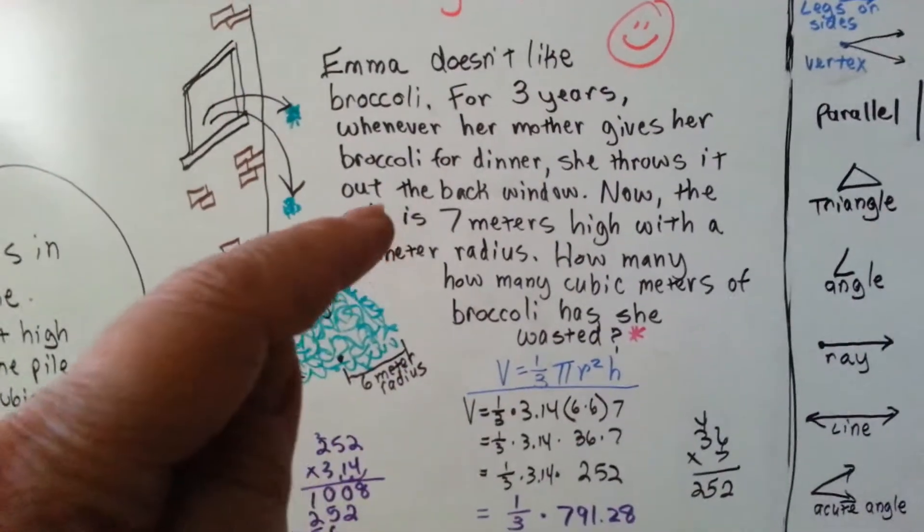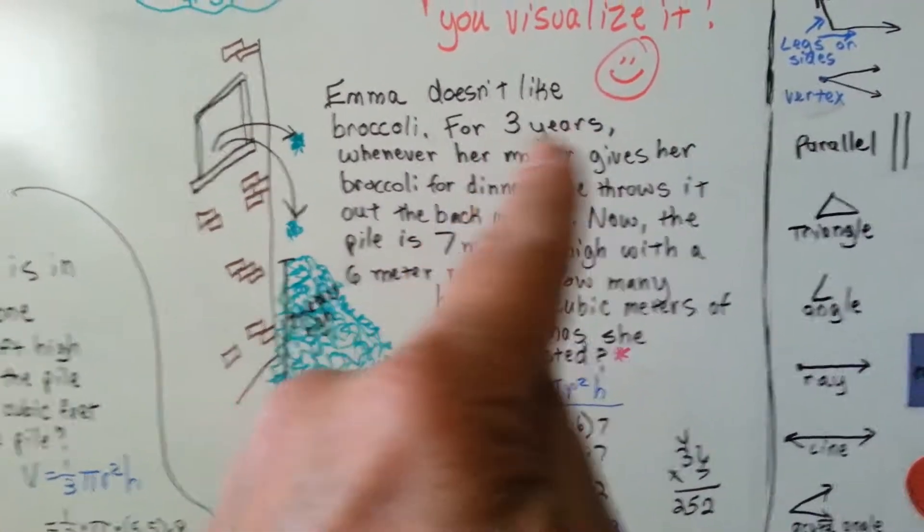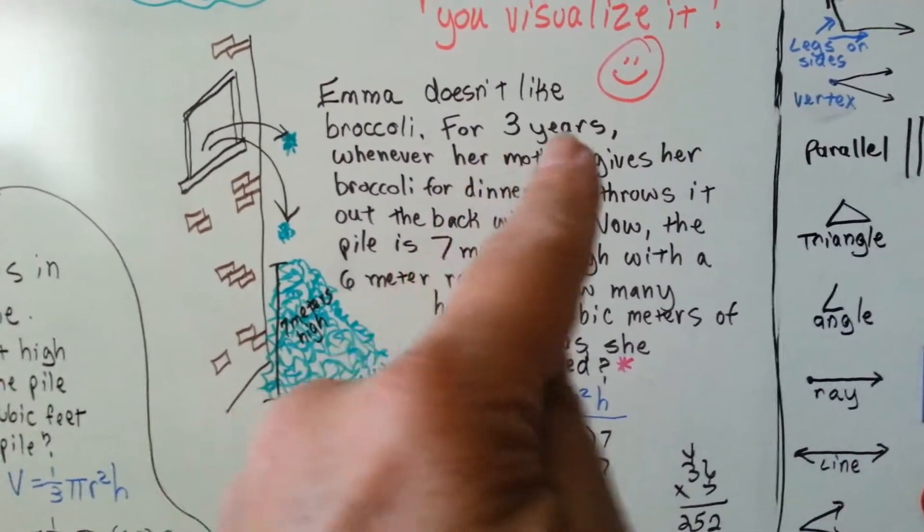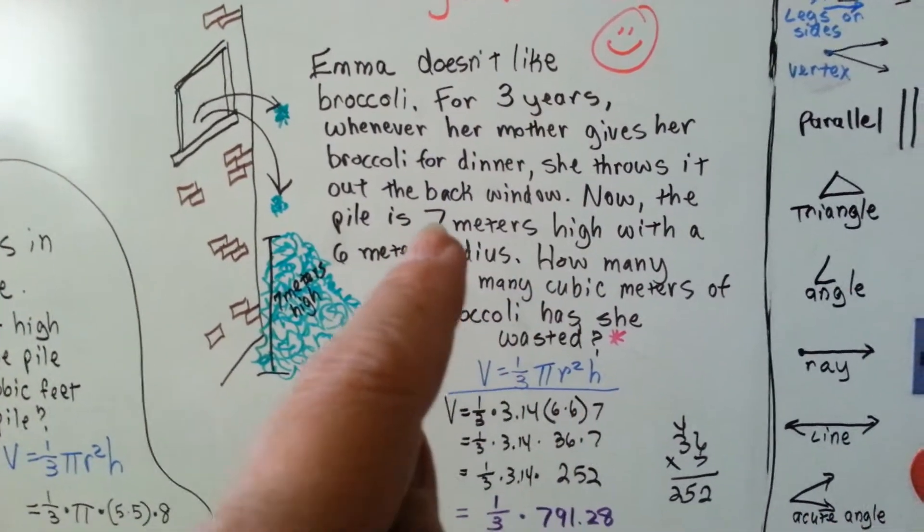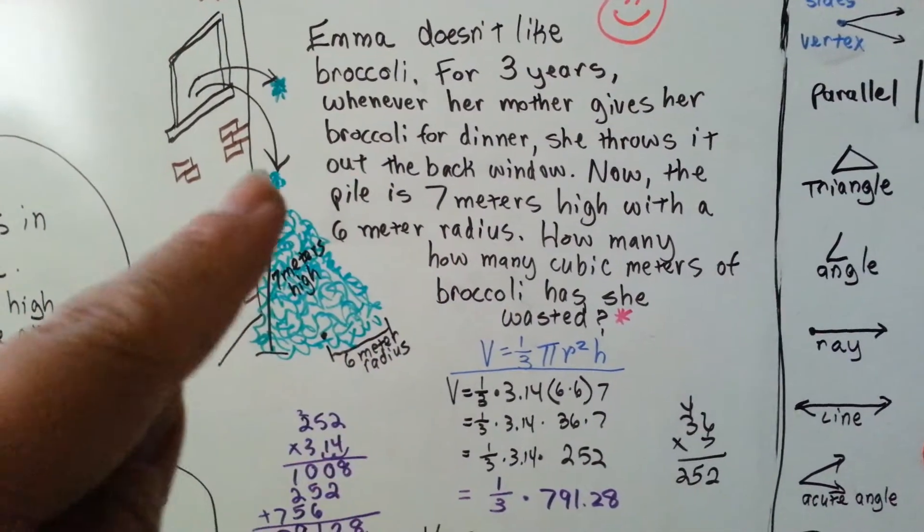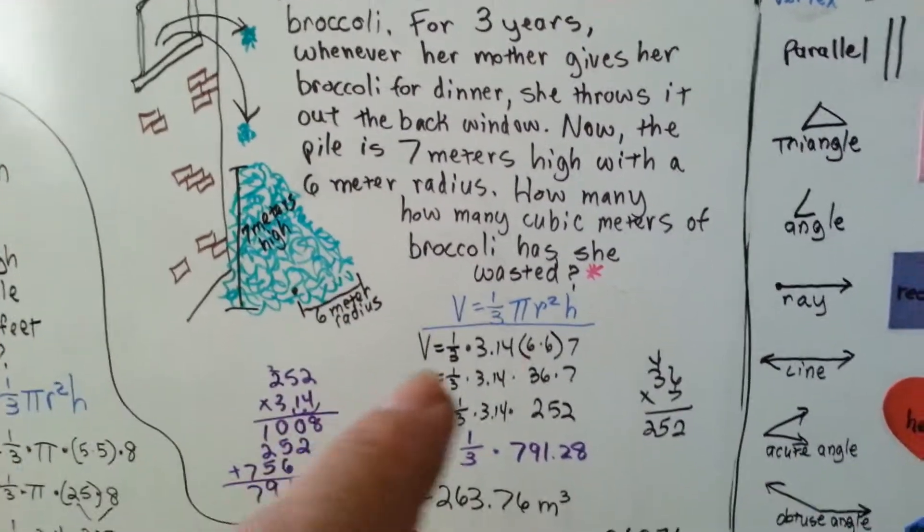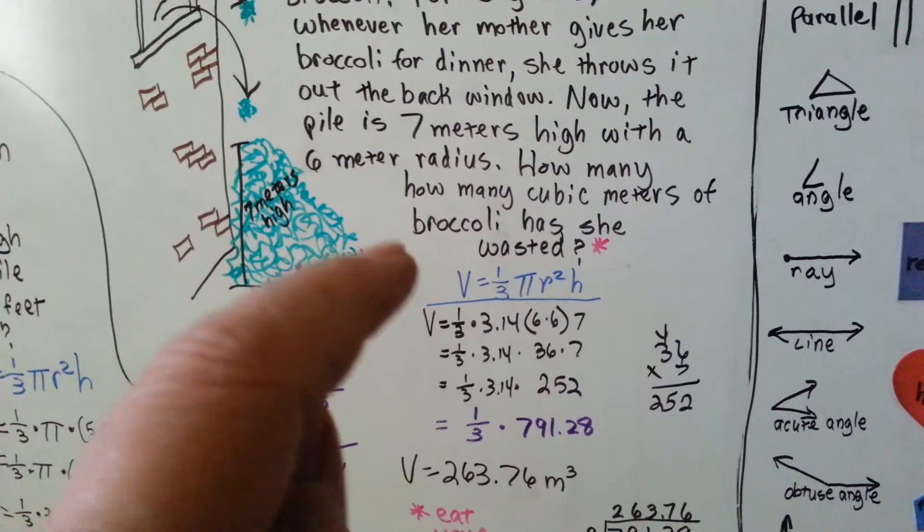So, we take the 3 years is not important. That's just there to confuse you. All you need is the 7 meters high and the 6 meter radius. So, we plug that into our formula.